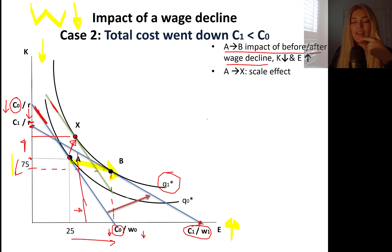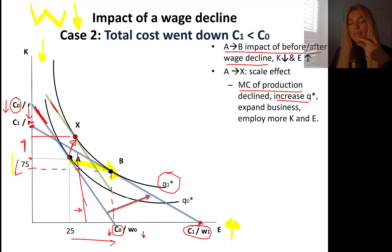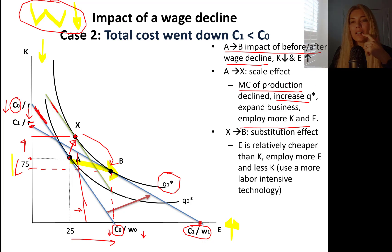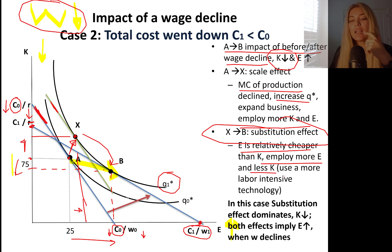However, substitution effect says that, decrease your capital way down. A to X is scale effect, marginal cost of production decline. We increased quantity, expanded business, employ more capital and labor. Substitution effect is the X to B movement, which says like, labor is much cheaper. You need to hire more. Fire your capital. A to B, overall capital went down. Therefore, which effect has been dominant? Your substitution effect dominated in this case. Why? Because labor is relatively cheaper, employ more workers, less capital. In this case, substitution effect dominates, capital went down. Both effects imply labor going up when wage rate declines.